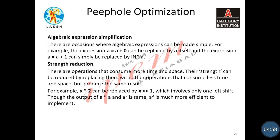The last technique is strength reduction. In strength reduction, there are operations that consume more time and space — their strength can be reduced by replacing them with other operations that consume less time and space but produce the same result. For example, x multiplied by 2 can be replaced by a left shift operator. This is an example of strength reduction — we replace an operator with another that consumes less time and space. All these are peephole optimization techniques.